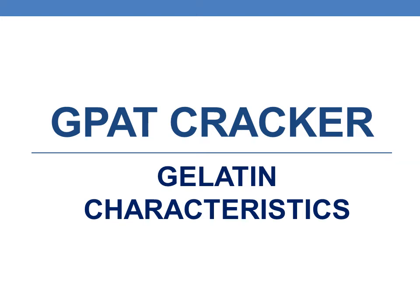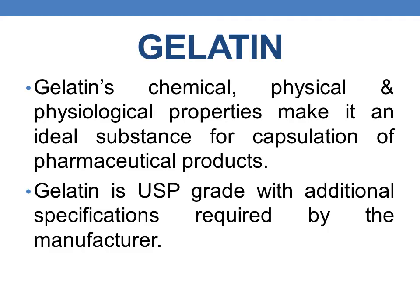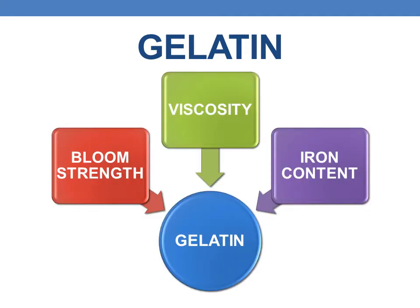Hello everyone. Now we will be discussing about the gelatin characteristics. Gelatin's chemical, physical, physiologic, and physicochemical properties make it an ideal substance for the capsulation of pharmaceutical products. Gelatin is available in USP grade with additional specifications required by the manufacturer. In the current session, we will be discussing about the three characteristic triads of gelatin that govern its final product.